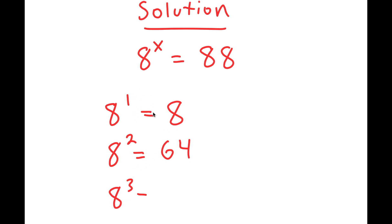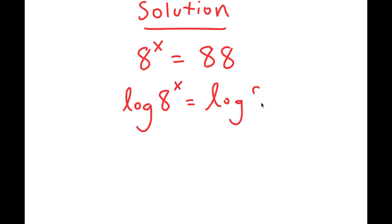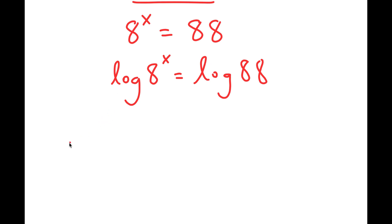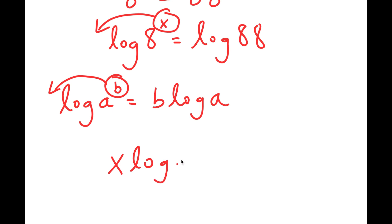So we want to find the exact value of x. How are we going to do that? Well, that's what we can use logarithms for. What I'm going to do is take the log on both sides, so I get log of 8 to the power of x is equal to log of 88. Now I can use an important property of logarithms that states that if I have something in the form log a to the power of b, I can move the exponent to the front, so this turns into b times log a. In this case, I have log 8 to the power of x, so x moves to the front and this turns into x times log 8 is equal to log 88.